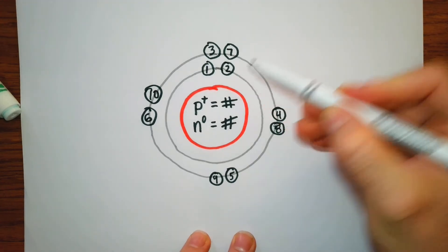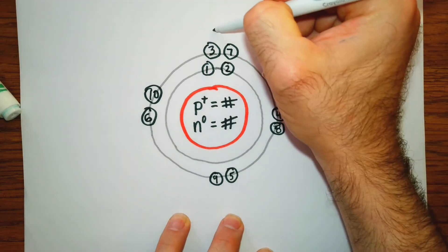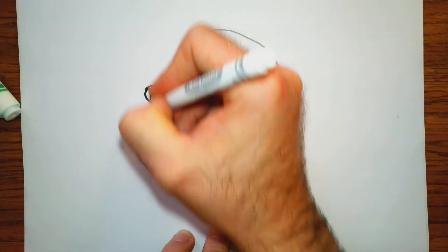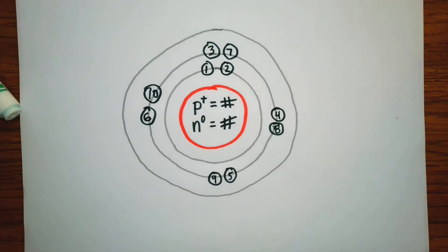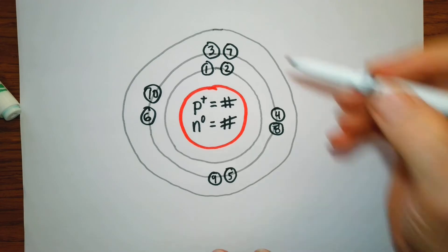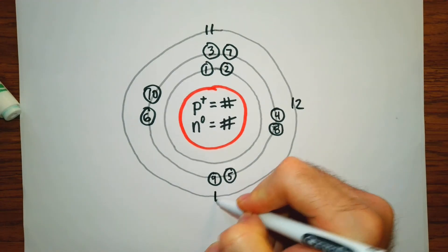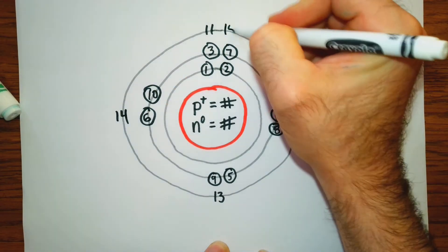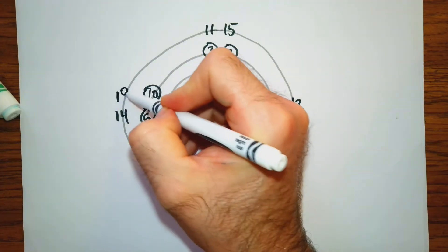As a recap: the first orbital has two, the second orbital has a maximum of eight. This third orbital also has a maximum of eight, so I'm going to draw a circle for that ring. We have ten electrons so far, so now let's do our eleventh through eighteenth electrons — filling the third orbital up to eighteen total.